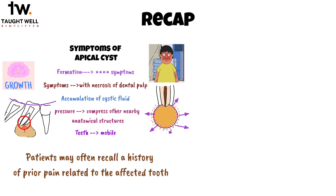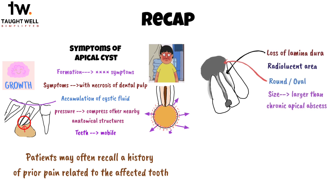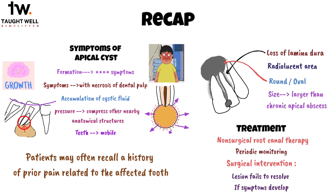Patients may often recall a history of prior pain related to the affected tooth. Typically, a radiographic examination reveals specific characteristics: there is often a loss of continuity in the lamina dura along with a radiolucent area, which generally appears round in shape, unless adjacent to other teeth, in which case it might appear flattened and take on an oval form. Non-surgical root canal therapy is typically the first choice for treatment, followed by periodic monitoring. Surgical intervention is only considered if a lesion fails to resolve or if symptoms develop.